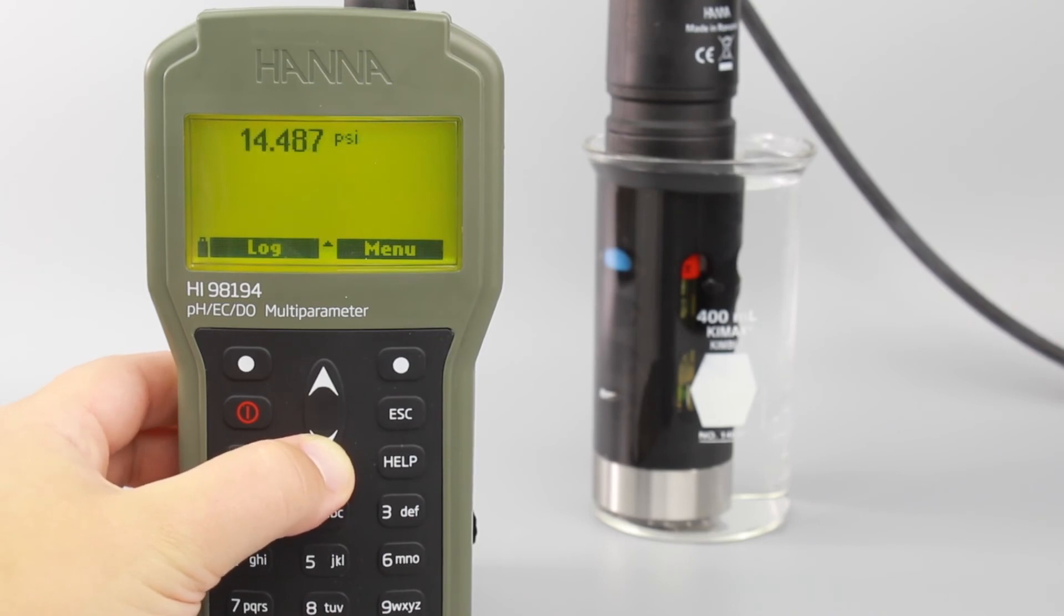So that's it. The Hanna Instruments HI-98194 Multi-Parameter Meter is perfect for field use across many industries. You can find everything you need for your meter at hannainst.com/HI-98194. Thank you for stopping by, and we hope you found this helpful.